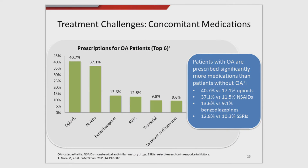Osteoarthritic patients are prescribed more medications than people who don't have osteoarthritis. They take more opioids, more NSAIDs, more benzodiazepines, more SSRIs, and on and on. Our osteoarthritic patients are taking more medicines than those who don't have the pain of osteoarthritis. This means it's especially important to pay attention to everything they are doing and taking, as this is a very complex population.